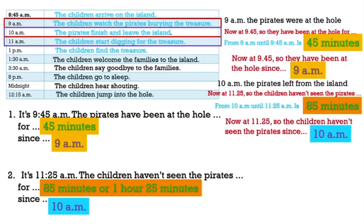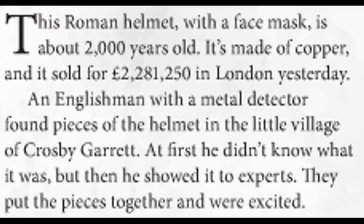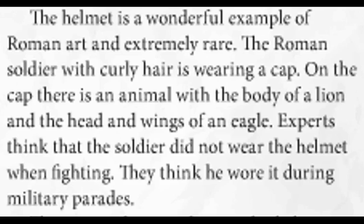Now let's listen and read the text from the student book. This Roman helmet with a face mask is about 2,000 years old. It's made of copper and it sold for 2,281,250 pounds sterling in London yesterday. An Englishman with a metal detector found pieces of the helmet in the little village of Crosby Garrett. At first he didn't know what it was, but then he showed it to experts. They put the pieces together and were excited. The helmet is a wonderful example of Roman art and extremely rare.